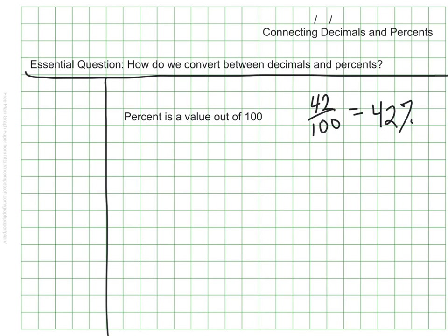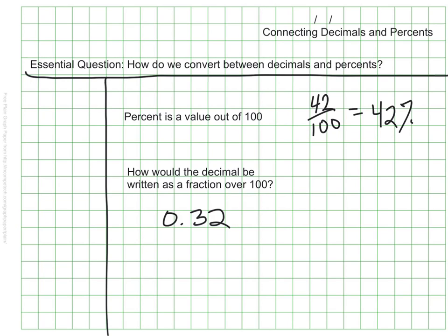Decimals can be written as percents too. The trick is to simply think of how a decimal would be written as a fraction over 100. That represents the value of the number out of 100, and therefore represents the percent. 32 hundredths would be the same as the fraction 32 over 100, and since that's out of 100, that would be 32%.